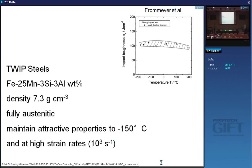POSCO makes lower-manganese TWIP steel with about 15 wt% manganese, but the original focus was on very high manganese steels with some silicon and aluminium as well. The silicon and aluminium reduce the density from 7.8 to about 7.3 g/cm³. The steel is fully austenitic with very good properties even at cryogenic temperatures: impact toughness of about 100 J in a Charpy impact test maintained over a large temperature range, because austenite does not normally have a ductile-to-brittle transition temperature.